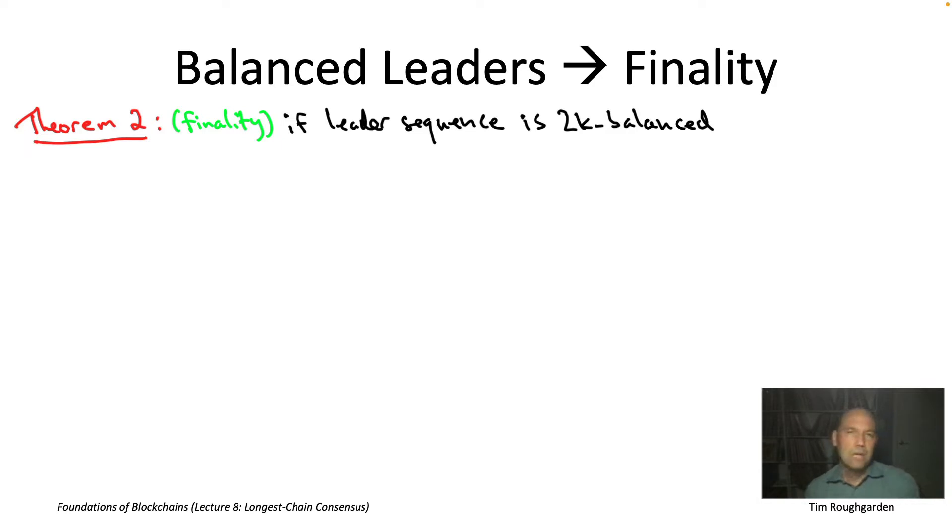We're going to assume that we have a 2K balanced leader sequence. Just like in the last result, if you were paying careful attention, you'll notice we only need to assume 2K plus 2 balanced, but whatever. Let's work with 2K balanced among friends.